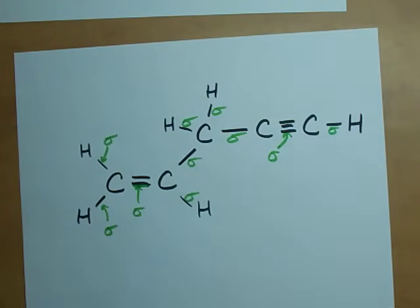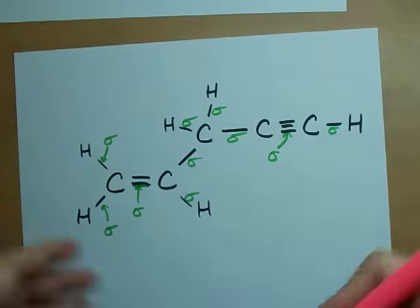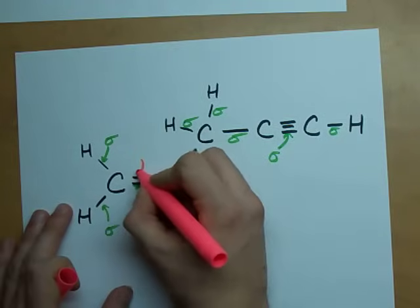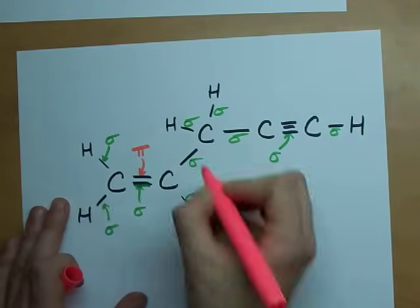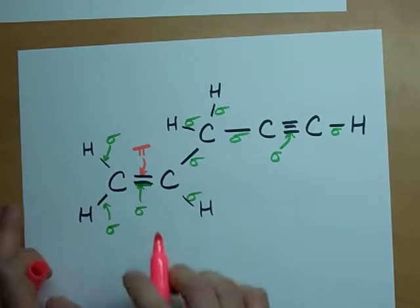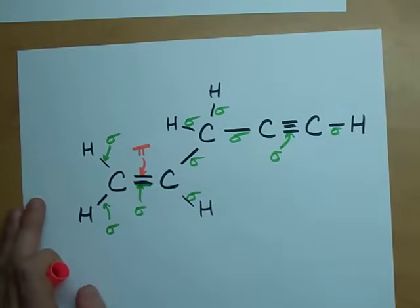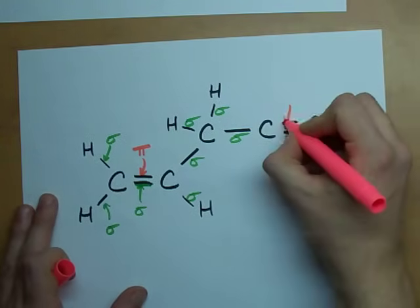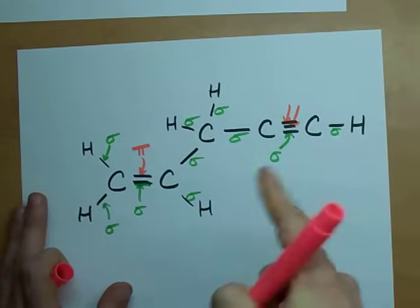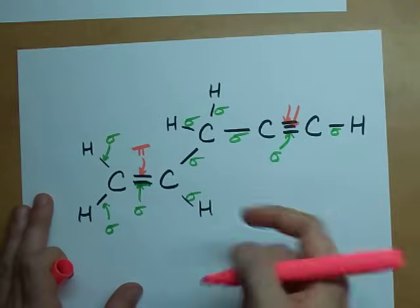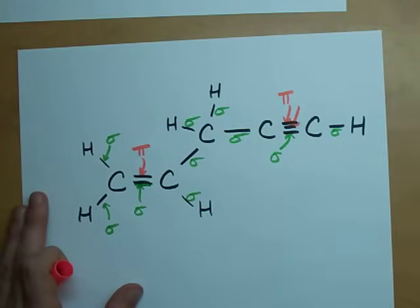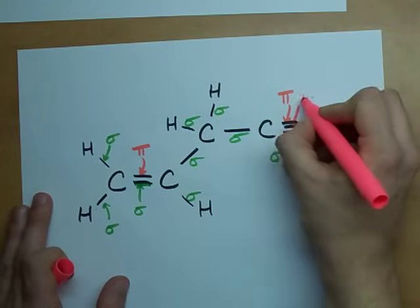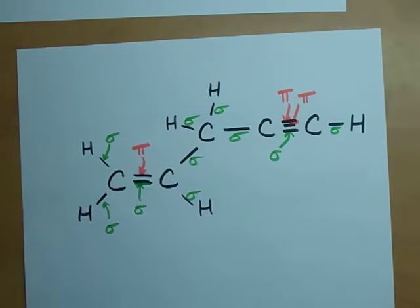Every single bond carbon makes with something else is going to be a sigma bond. But every second or third bond is a pi bond. See, there is a bond there. One of those bonds is a pi bond. The first one's sigma, the second one's pi. Here, there are two extra bonds. There's a second and third bond. One of them's a pi bond, and the other one's a pi bond. Every first one is sigma, and every second or third is pi.